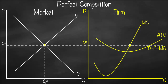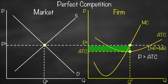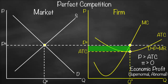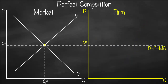Marginal revenue is the horizontal line representing price and our demand curve, while marginal cost is the Nike-shape curve. Their intersection gives our profit-maximizing output Q*. At Q*, I check the point where it intersects the average total cost curve, which gives me the average total cost. Since price is bigger than average total cost, our profit is greater than zero — this means we create economic profit, also called abnormal profit or super-normal profit.